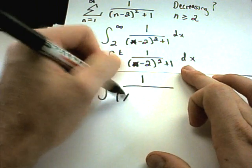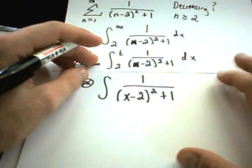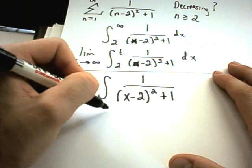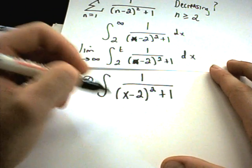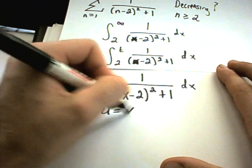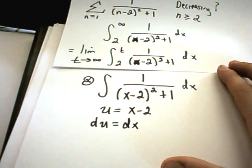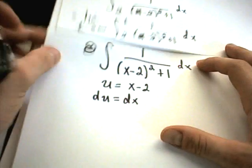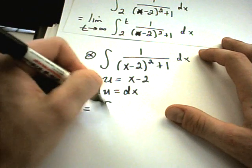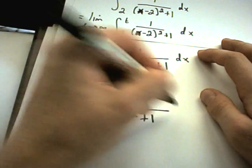1 over x minus 2 quantity squared plus 1. And this is going to be a problem that you can do just by, again, a u substitution. Maybe it sticks out to you right off the bat. So u is x minus 2. du will simply be dx. And now when I rewrite this problem, I'll have 1 over u squared plus 1 du.